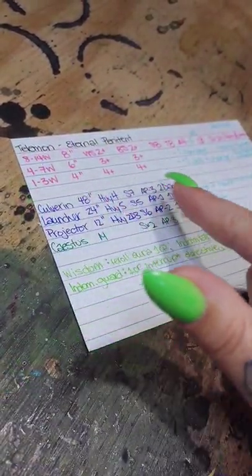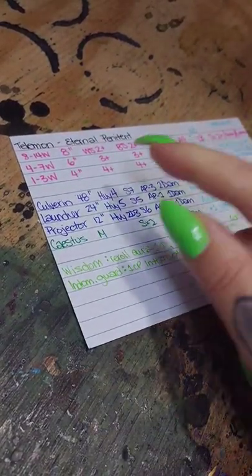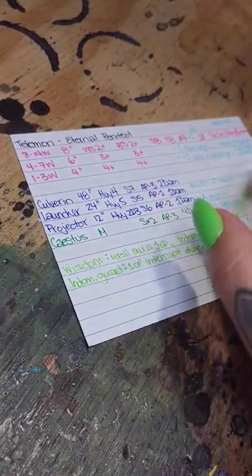I start off by putting the stats as contained in the damage chart for this particular vehicle. As it takes damage it degrades and therefore on line two and three you'll see how it degrades.